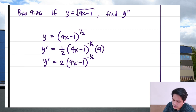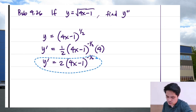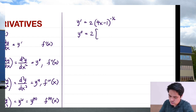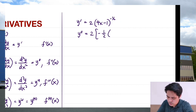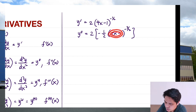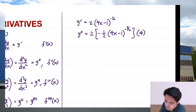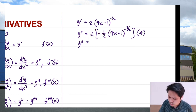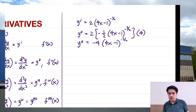Now let's find the second derivative. Since 2 is constant, we multiply it by the derivative of (4x − 1)^(−1/2). Using the chain rule: (−1/2)(4x − 1)^(−3/2) times 4. So 2 times (−1/2) is −1, and −1 times 4 is −4. Therefore y double prime = −4(4x − 1)^(−3/2).